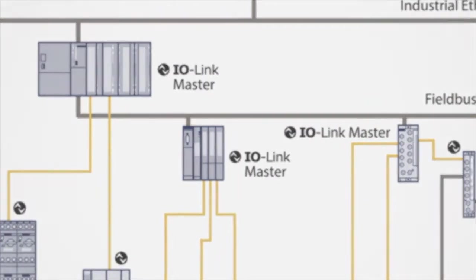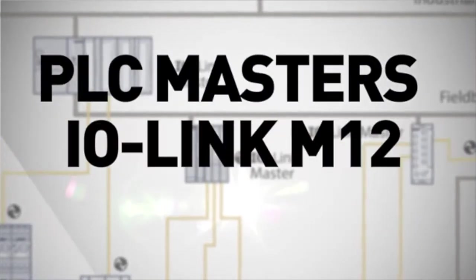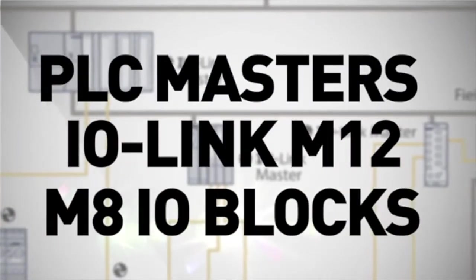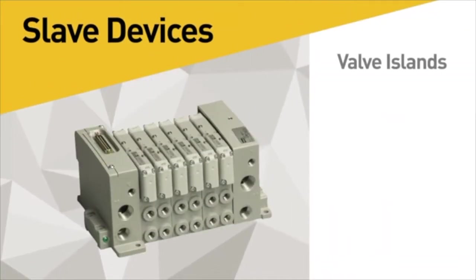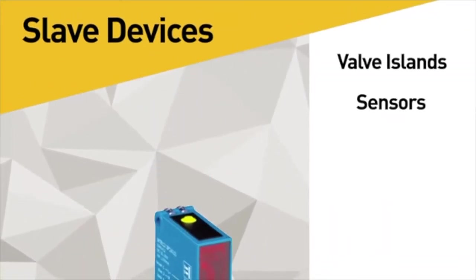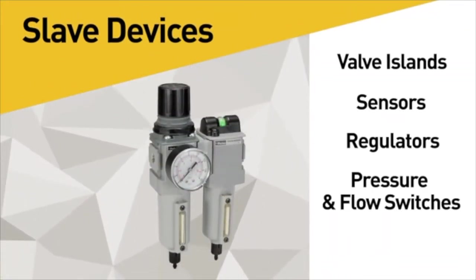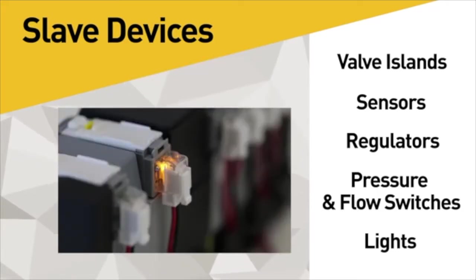Master devices include PLC masters or IO-Link M12 or M8 IO blocks. Slave devices include pneumatic valve islands, sensors, regulators, pressure and flow switches, lights, and several others.